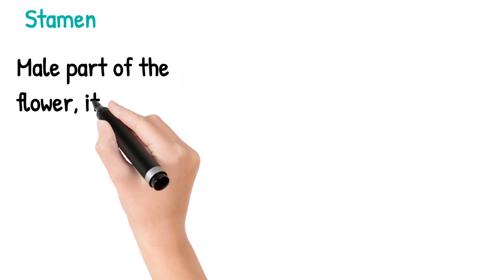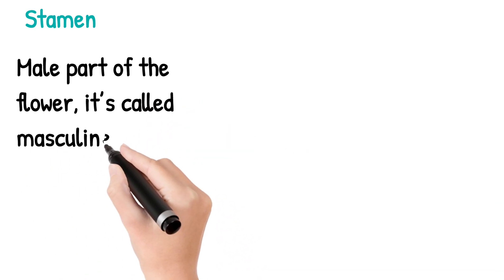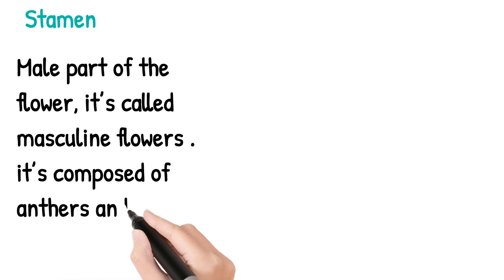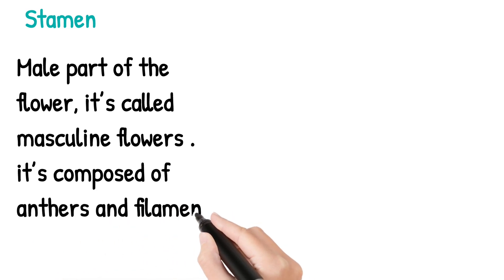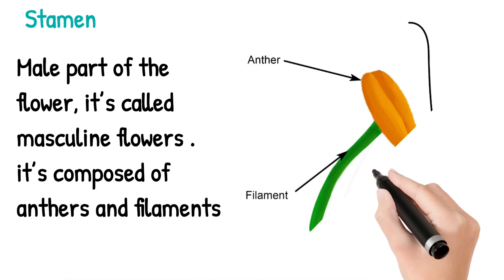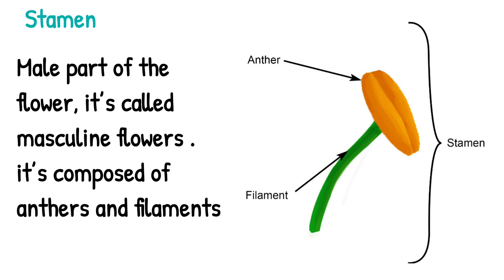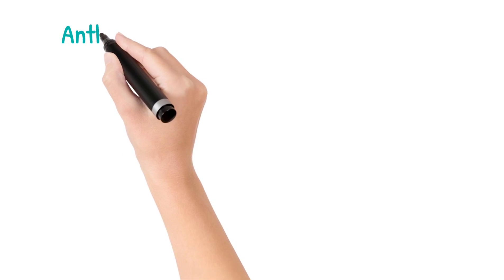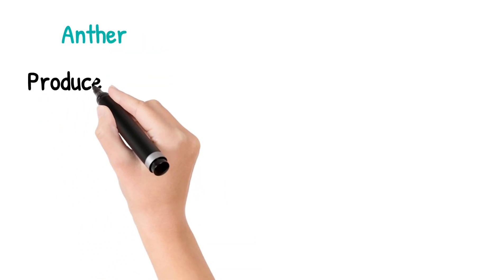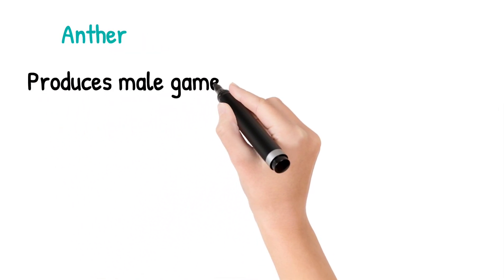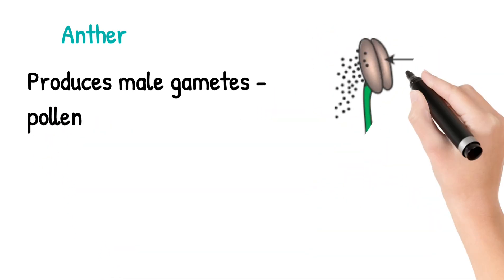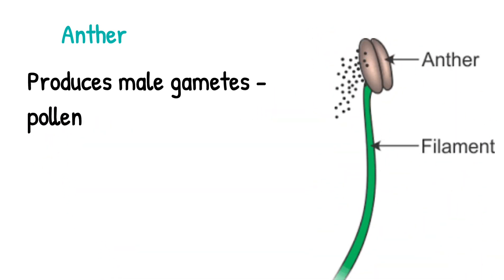Next we move on to the stamen. The stamen is the male part of the flower. It is composed of the anther and filament. You can see the picture — this picture shows the stamen, which includes the anther and filament.